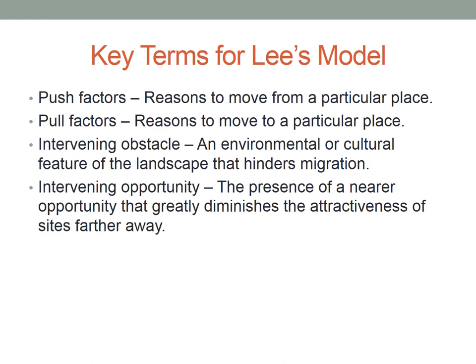In addition to this, Lee's Model is also based on the process from the source to the destination. The intervening obstacle is an environmental or cultural feature of the landscape that hinders migration — it slows it down, serves as an obstacle. It doesn't mean it's going to stop migration, though it might — it makes it more challenging. But in the same way there might be an intervening obstacle, there might also be an intervening opportunity: the presence of a nearer opportunity that greatly diminishes the attractiveness of sites farther away.